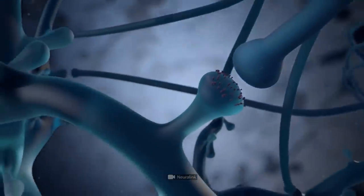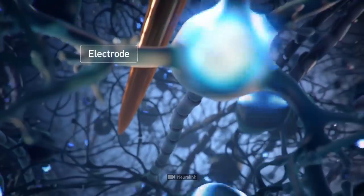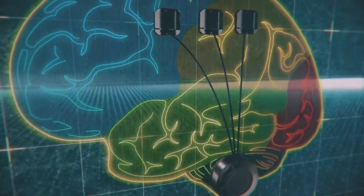Elon Musk promised to conduct the first experiments on the human brain at the end of 2020. If the first monkey with a brain chip played on a computer, what will be the capabilities of the human brain?